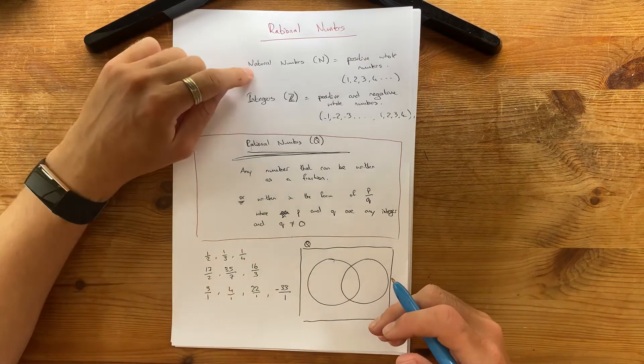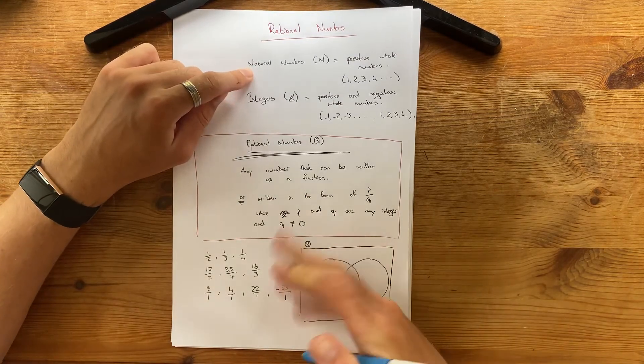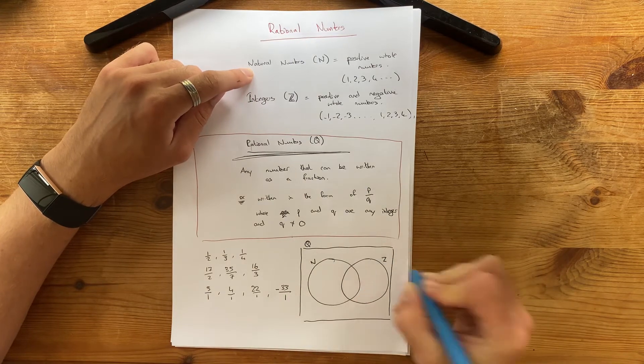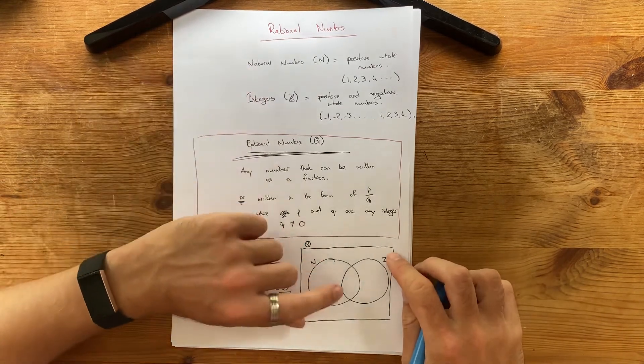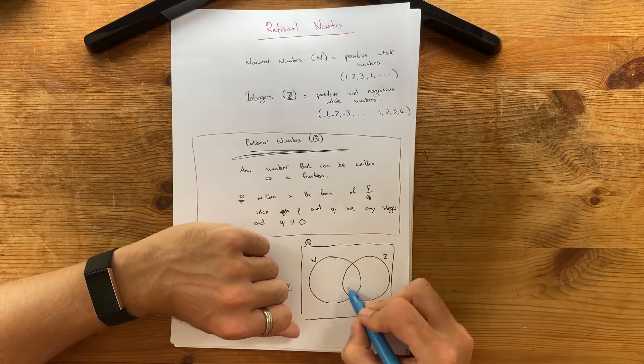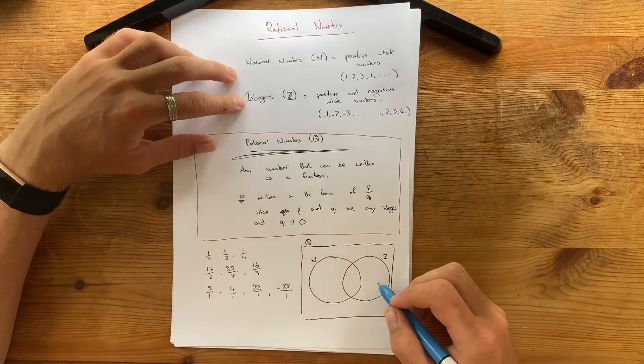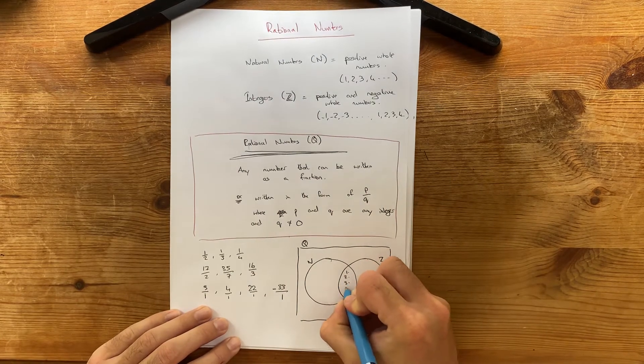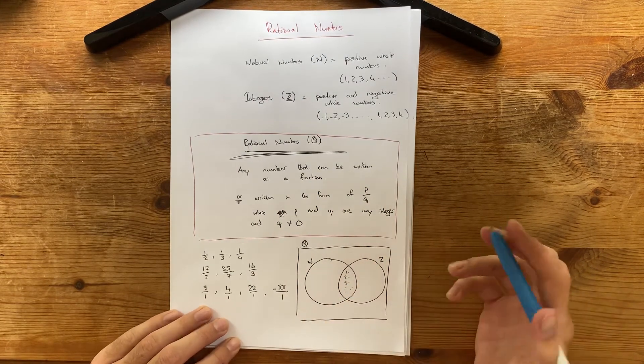And we remember that natural numbers are all positive whole numbers. And integers are all positive and negative whole numbers. Now, we know that this intersection here, what's the intersection between natural numbers and integers? It's the positive whole numbers. So, that's 1, 2, 3, and so on. There's infinite amounts of those.